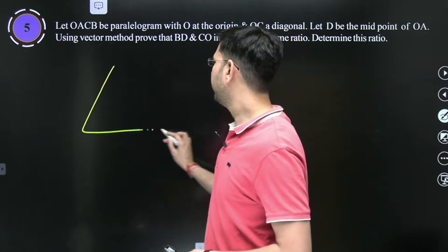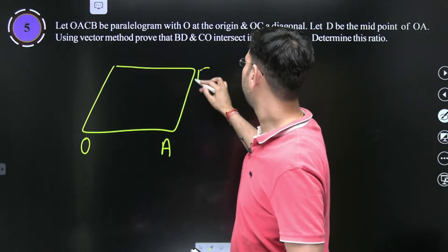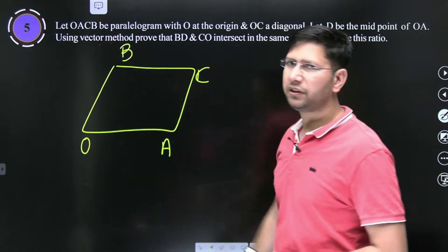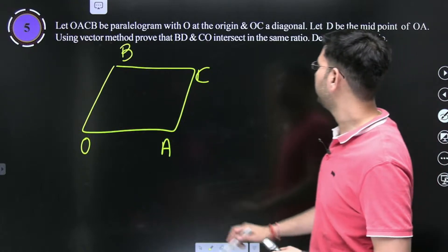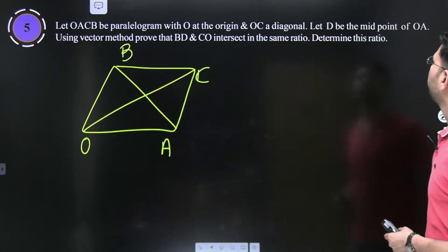Let's start with OC diagonal. First we have the question. OACB, OACB is not OABC because OC is the diagonal. D is the midpoint of OA.